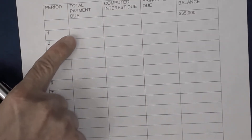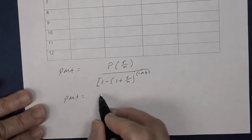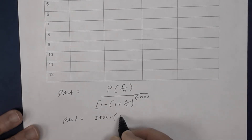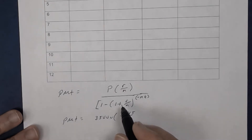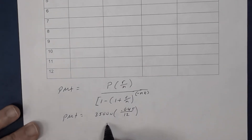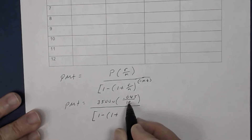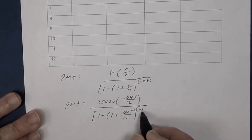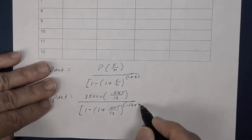In our problem we need to figure out the monthly payments. The monthly payment equals $35,000 times the rate — 4.5%, converted to decimal 0.045 — divided by n which is 12. That's your numerator. The denominator is 1 minus (1 plus 0.045 divided by 12) raised to the negative 12 times t, where t is 6 years.